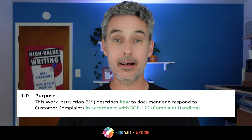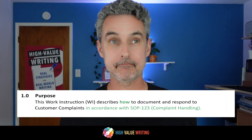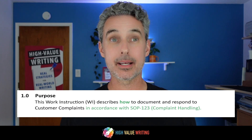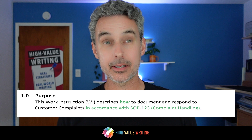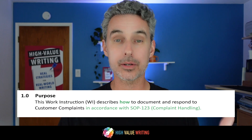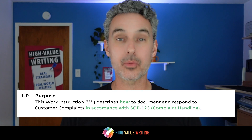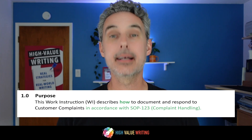It draws a direct link in the purpose statement to the requirement that calls for it. After you've written your SOP and defined the who, what, when, and where, you will likely need a work instruction that shows how to do what you've defined in your SOP. Here's an example of a work instruction purpose statement: "This work instruction describes how to document and respond to customer complaints in accordance with SOP 123 complaint handling."